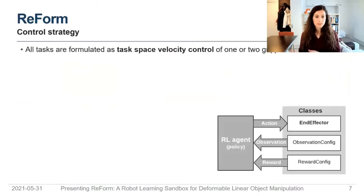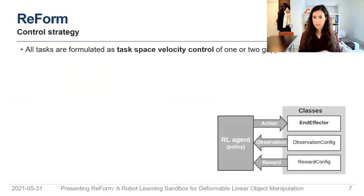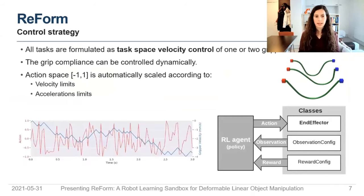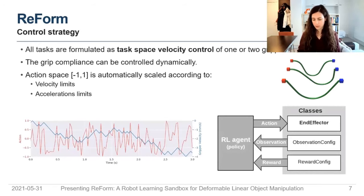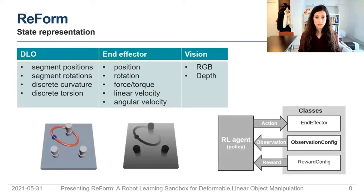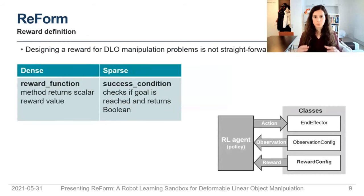REFORM has three classes. The end effector class defines how we control the object — it can be with one or two grippers, and the compliance of the grasp can also be controlled. There is automatic scaling so that the reinforcement learning agent always learns between minus one and one, with scaling for velocity and accelerations that make sense for the simulation. There are several observation types, notably RGB and depth vision data.